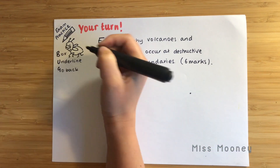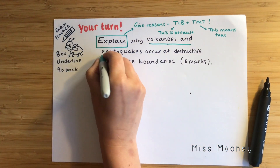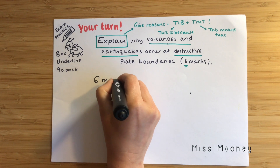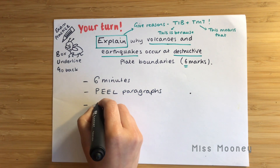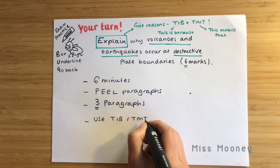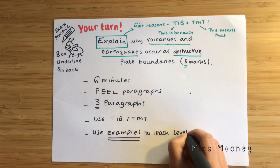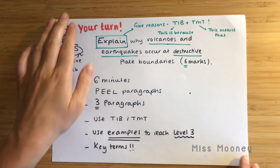Remember: box the command word — 'explain,' give reasons, use 'this is because' and 'this means that.' Underline the key things you need to include: volcanoes and earthquakes, and destructive plate boundaries. Do not talk about any other plate boundaries, only destructive. Go back and read the question to make sure you've picked out that key information correctly. You should be spending six minutes on this question, doing PEE paragraphs — you can do the link if you want, but it's not necessary. You must have three paragraphs, include 'this is because' and 'this means that,' and use examples, named places, data, key facts, figures, and key terms to reach level three. There are plenty of key terms about destructive plate boundaries to include.